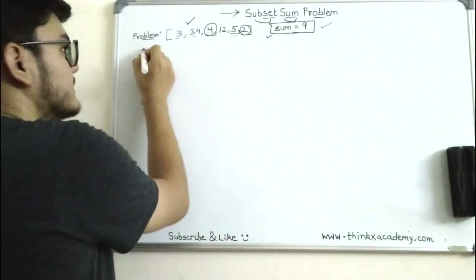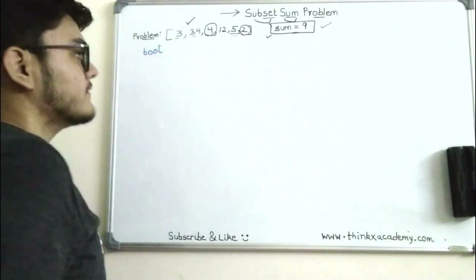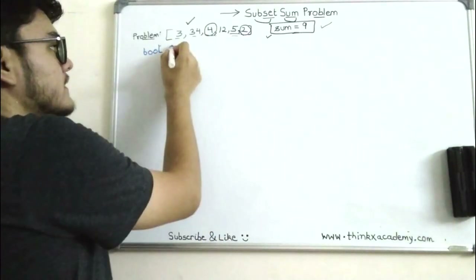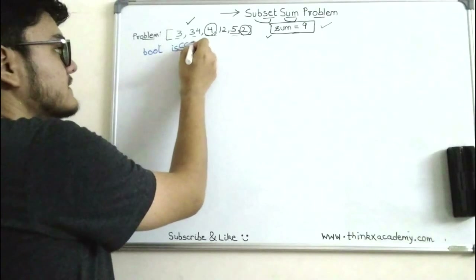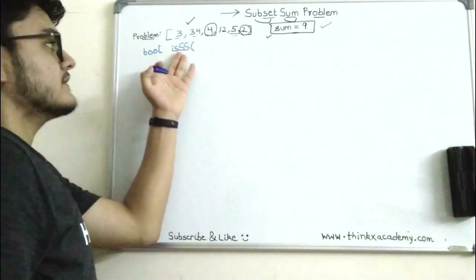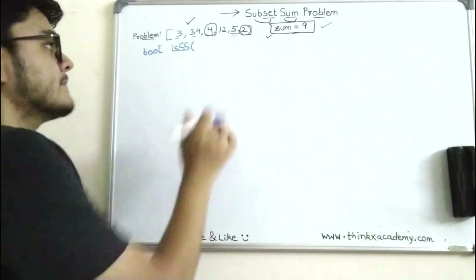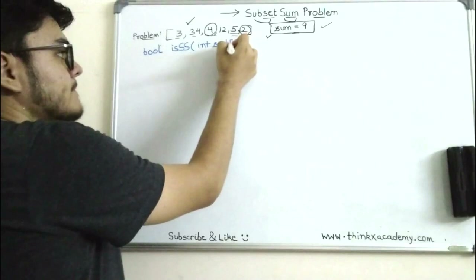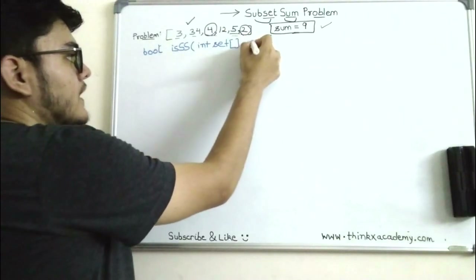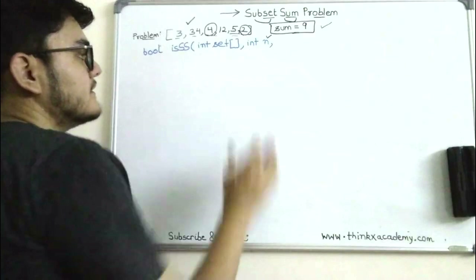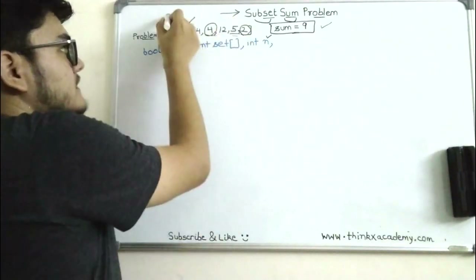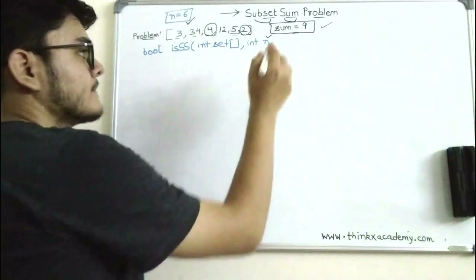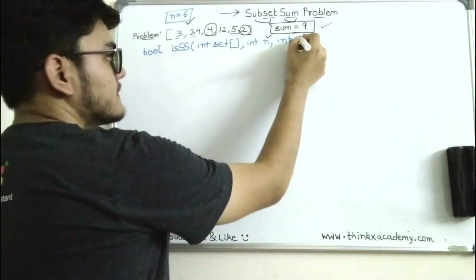Let's write the function. The return type is boolean. I'll name the function isSSS — short for 'is subset sum'. We provide the function with the set, the number of elements n (which is 6 in this case), and the variable sum.